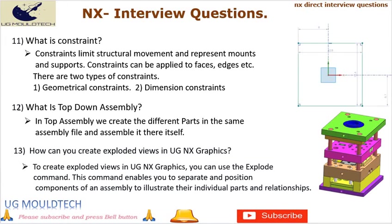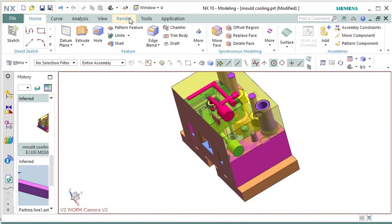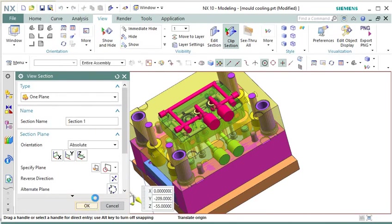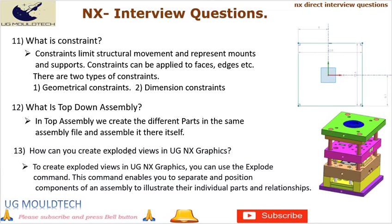Question 12: What is top-down assembly? In top-down assembly, we create different parts in the same assembly file and assemble them there. Top-down assembly is an approach used in UGNX (Siemens NX) for creating and managing assemblies by designing and controlling components at the assembly level. The overall assembly structure and relationships are defined first, and then individual components are designed to fit within that structure. Question 13: How can you create exploded views in UGNX Graphics? To create exploded views, you can use the explode command, which enables you to separate and position components of an assembly to illustrate their individual parts and relationships.